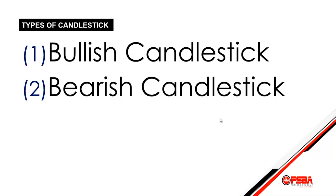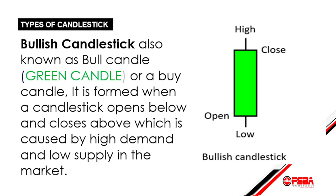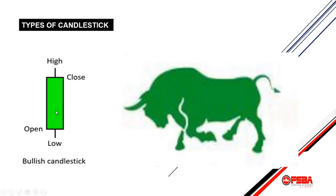Types of candlesticks: we have the bullish candlestick and the bearish candlestick. A bullish candlestick, also known as a bull candle, green candle, or buy candle, is formed when a candlestick opens below and closes above. This is caused by high demand and low supply in the market. The color is mostly represented with green.